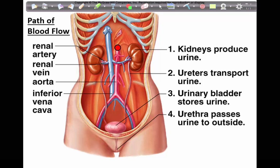Now follow the red moving circle on the screen. This circle represents blood. Blood is pumped out of the heart and travels through the aorta before reaching the renal artery and entering the kidney.